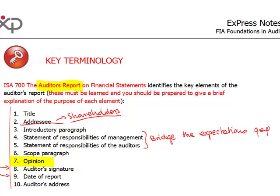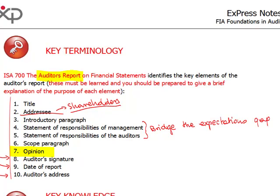Finally, three details: the signature, the date, and the auditor's address so that the auditor can be easily identified. Now this is the technical content of the auditor's report. But now let's discuss what goes into the report in terms of the opinion and in which cases.